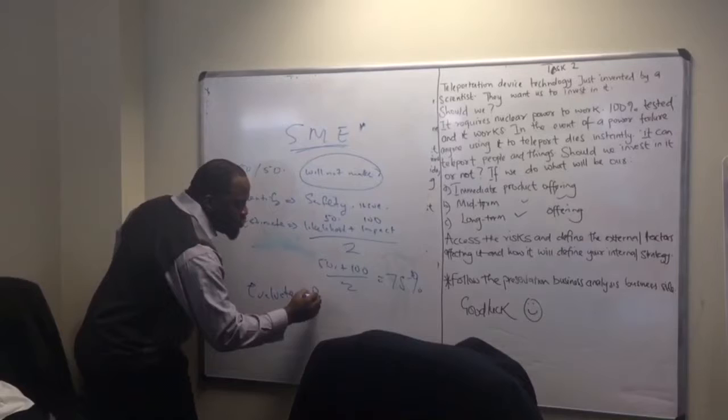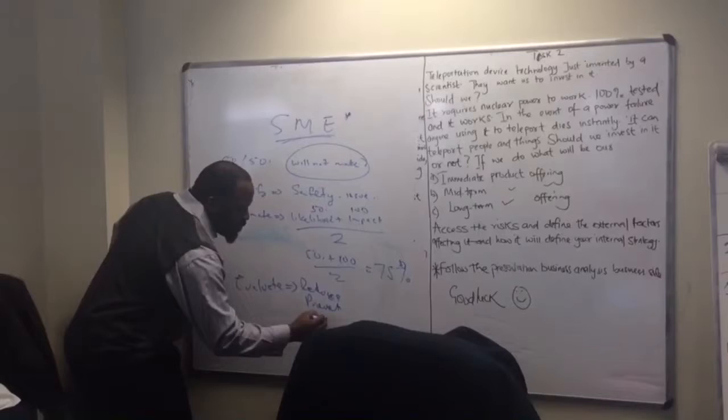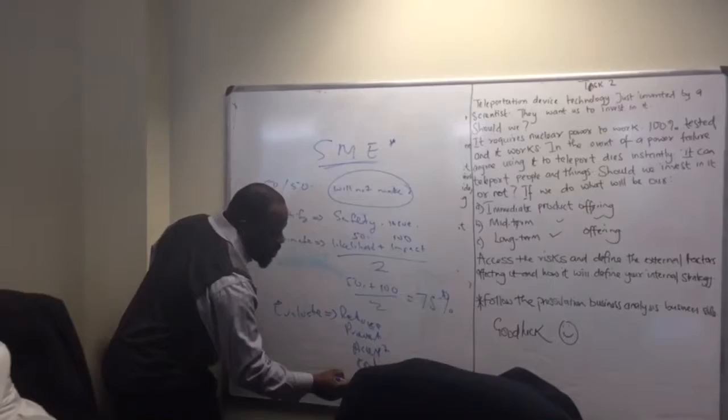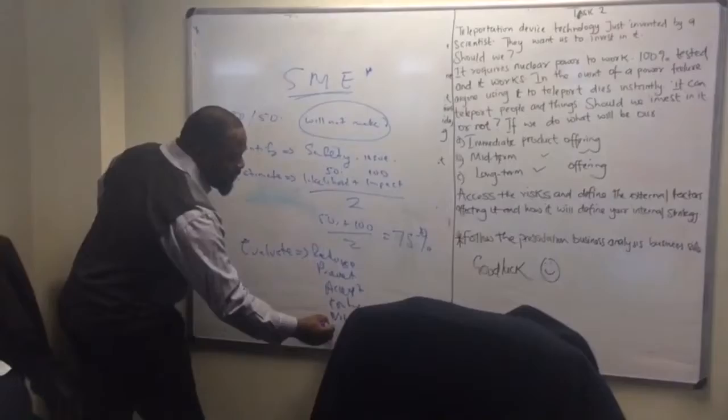And evaluating it is choosing to reduce that risk, choosing to prevent it, choosing to accept it, choosing to create a contingency, choosing to actually not go ahead at all, and I think there's one more, or transfer the risk.